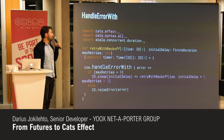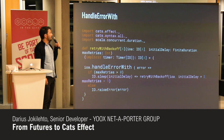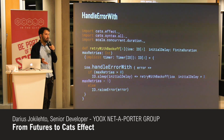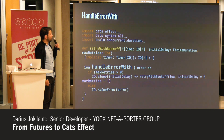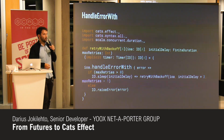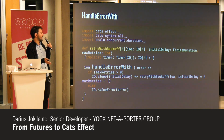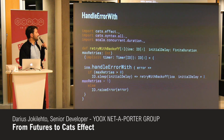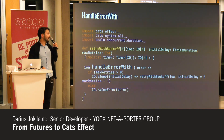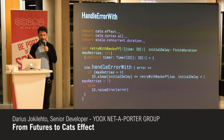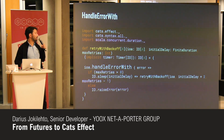Another useful bit of code — also from the Cats Effect documentation — is retry with backoff. This allows you to retry some code with an exponential backoff. New things here: IO.sleep does what it says. The `>>` operator, if you're not familiar, is Cats syntax for flatMap and ignore the input, so you can chain IOs without having multiple nested IOs. And raiseError is what you use when you want to wrap an exception in an IO.